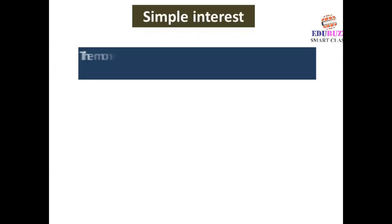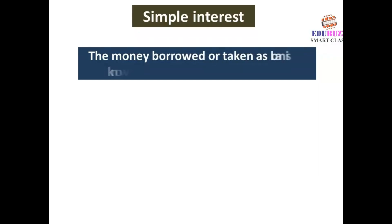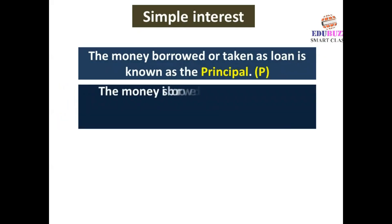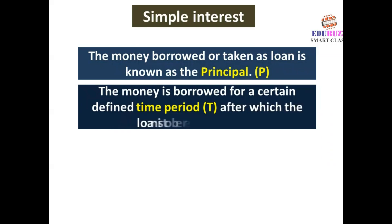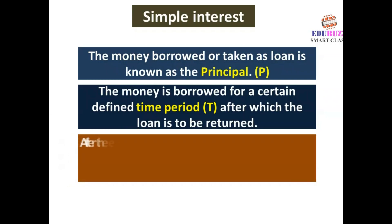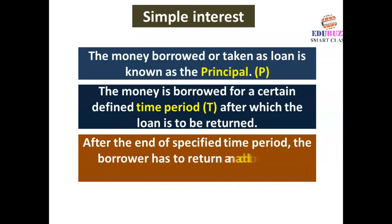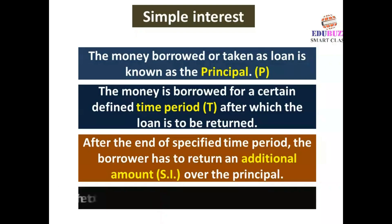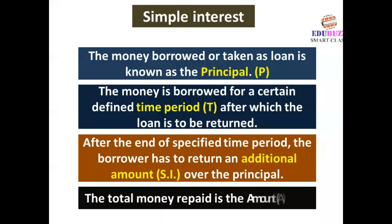Simple Interest: The money borrowed or taken as loan is known as the Principal (P). The money is borrowed for a certain defined time period (T), after which the loan is to be returned. After the end of the specified time period T, the borrower has to return an additional amount called Simple Interest (S.I.) over the principal. The total money repaid is the Amount (A).